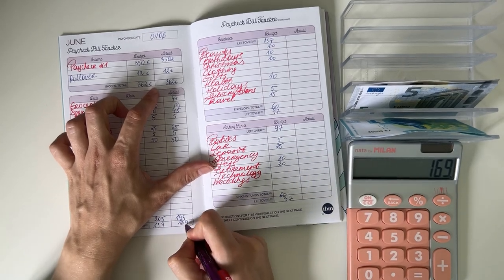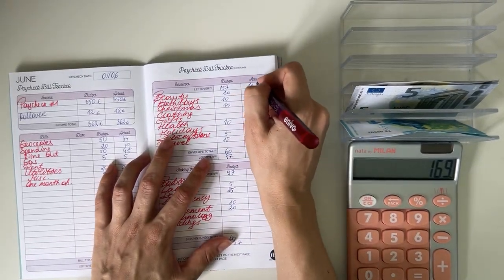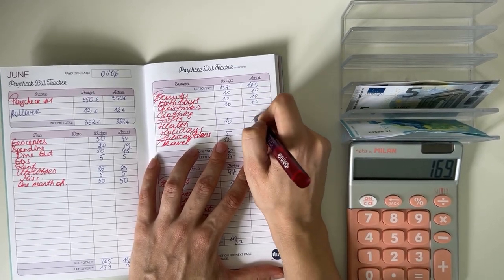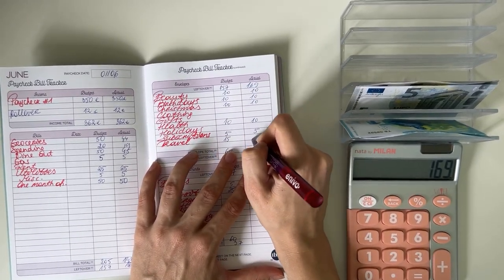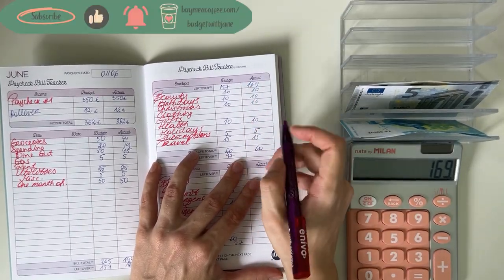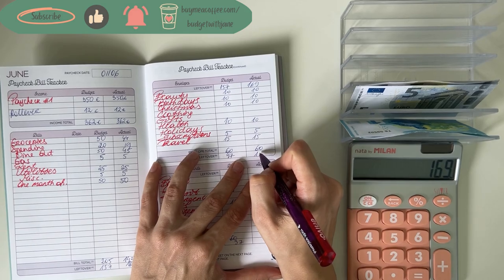So we're bringing that up here to short-term sinking funds. Beauty, Christmas, and birthdays all got 10. Health subscriptions got 5 and travel got 15. So that was 60 total, 169 minus 60 was 109.